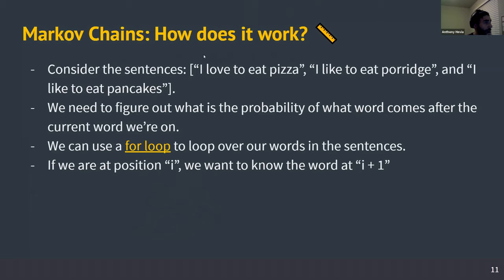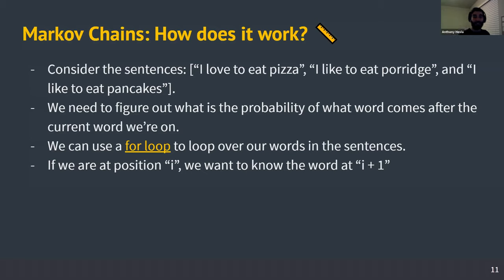If I'm on the word 'I', there are three sentences and two possibilities — from 'I' I can go to 'love' or I can go to 'like'. So the probability of going to 'love' is one third. Everyone in the chat got it. The probability from 'I' to 'love' is one third, or approximately 0.33. You guys are nailing it already.